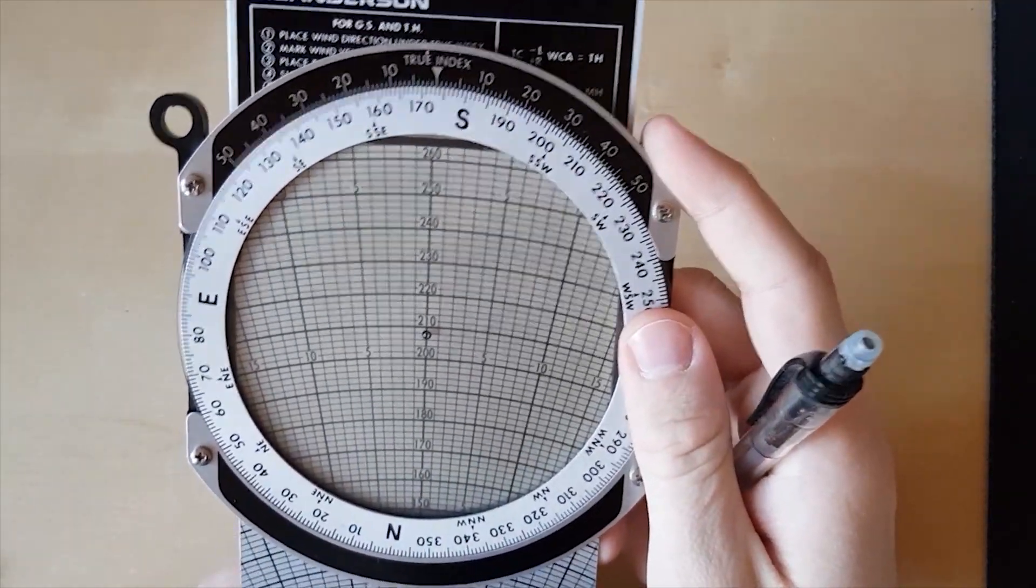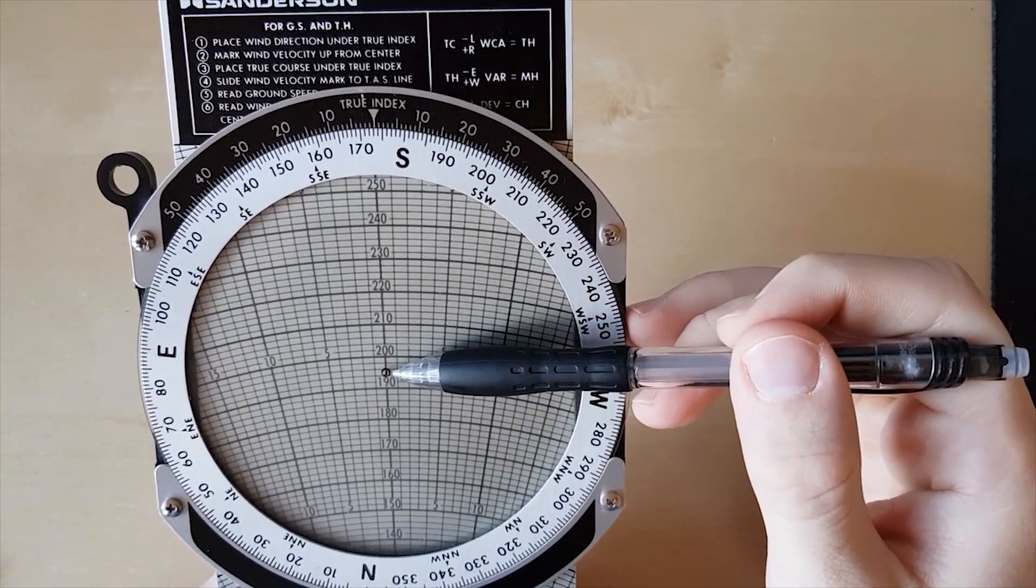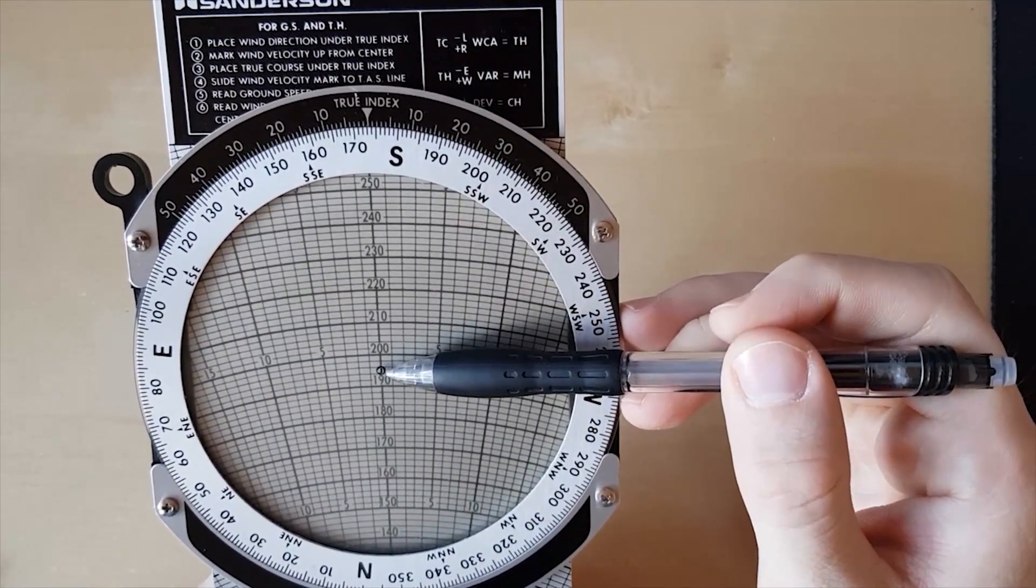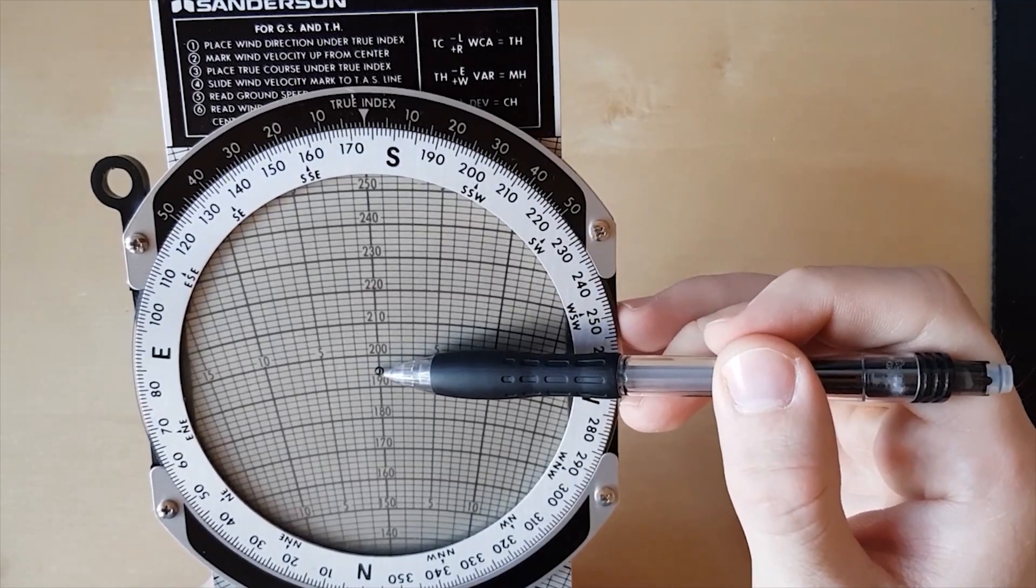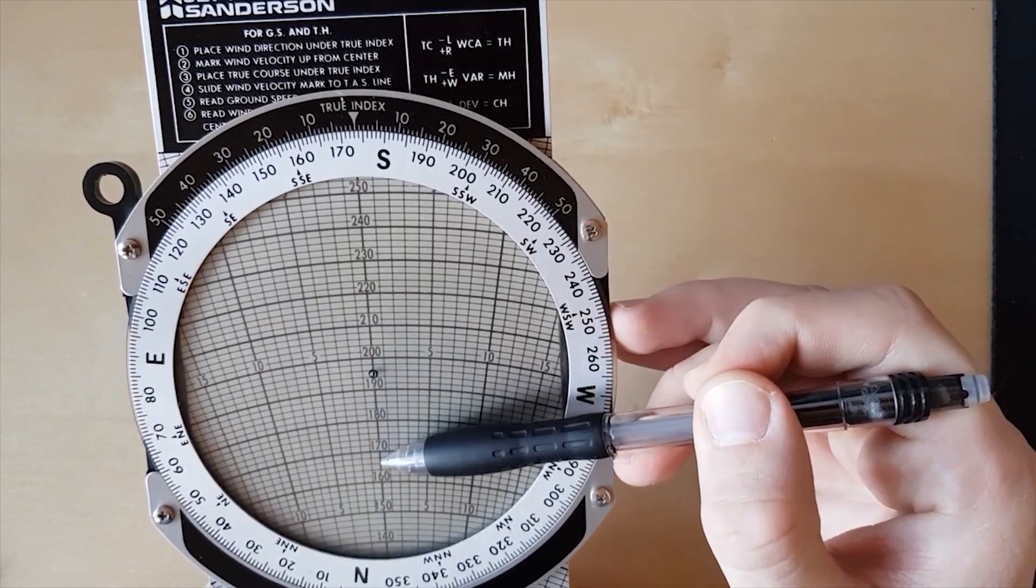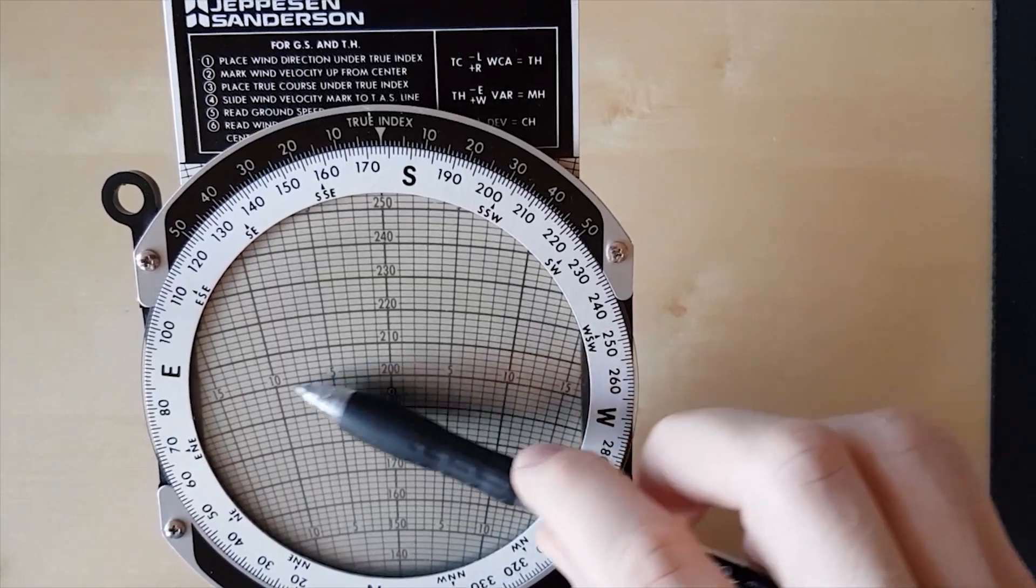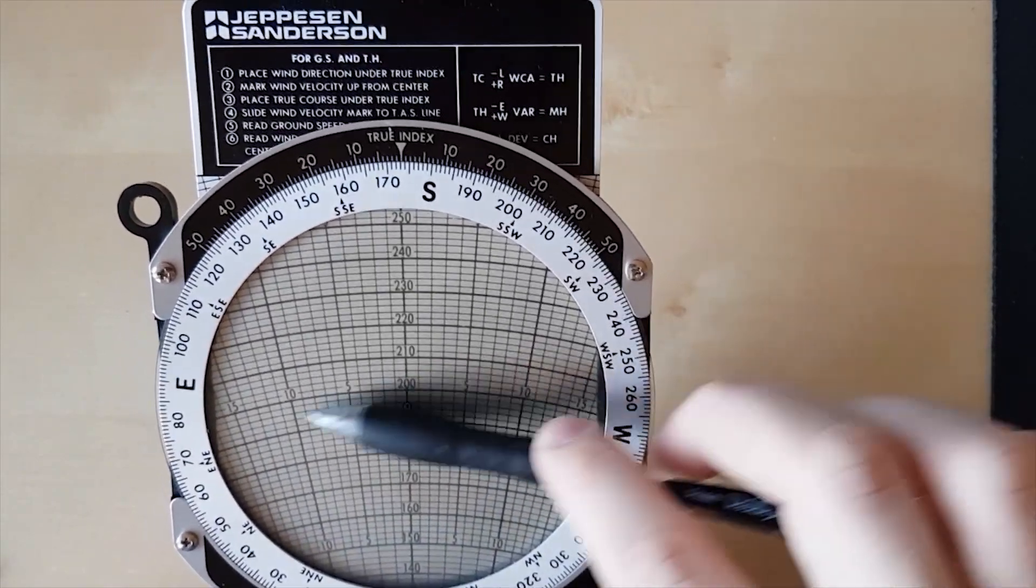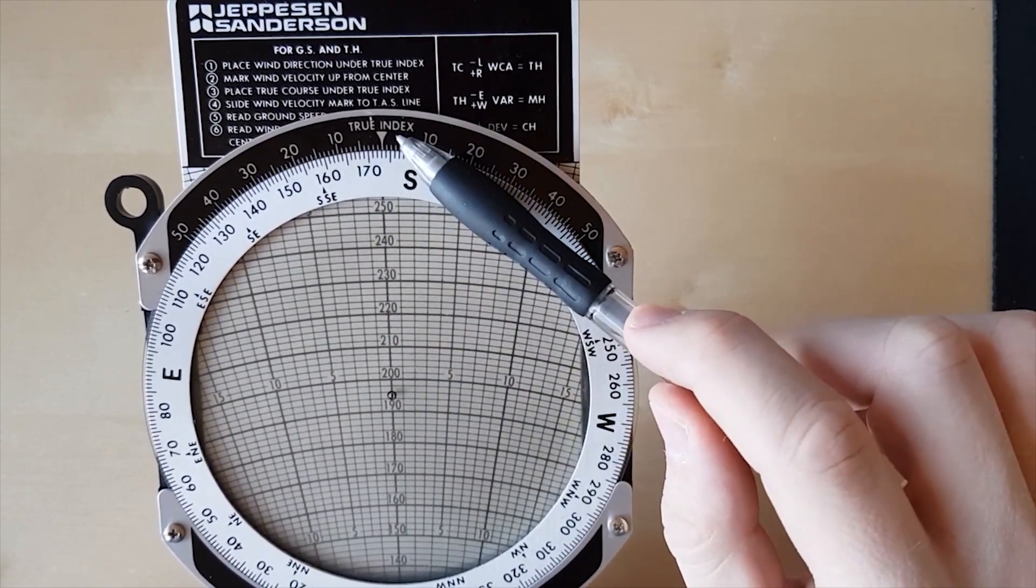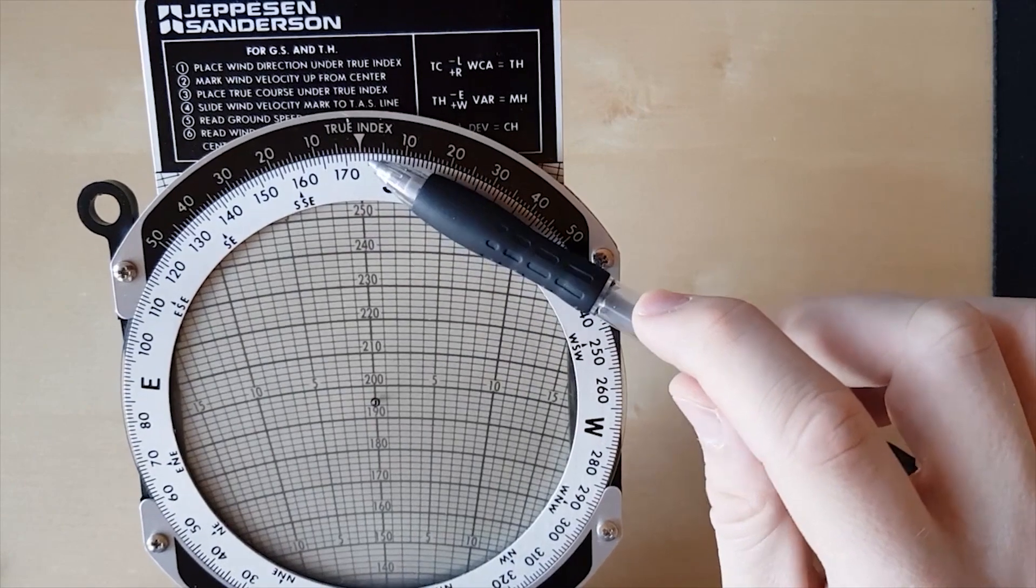At the beginning you need to know three rules. First rule is that center is always true airspeed. Second rule is you mark wind velocity always below the true airspeed mark. And third, the ground speed marked or read from here is only true when under true index you set heading of the plane.